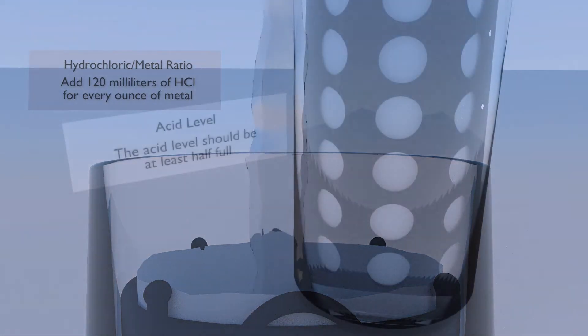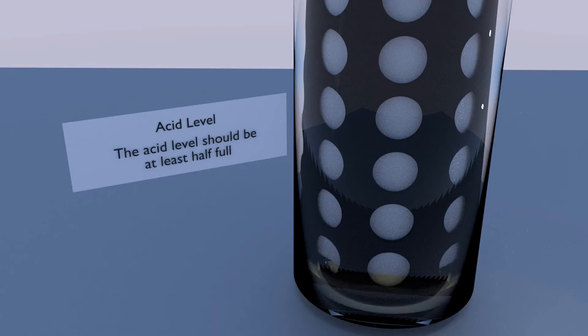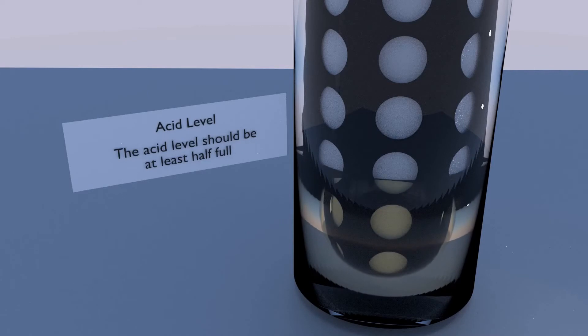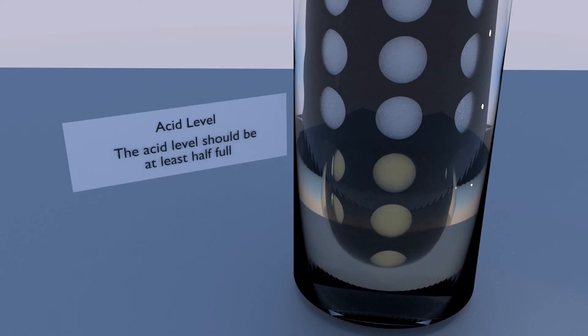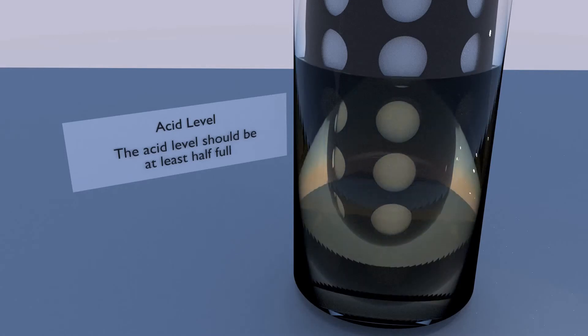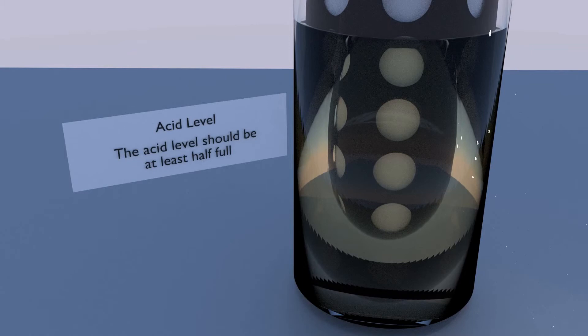The acid level in the container should be at least half full. No worries, if you are refining only small quantities of metal and the acid level is not high enough, you can add extra acid to reach this level. However, please note that adding extra acid may require the addition of some extra urea prior to precipitation of your gold.